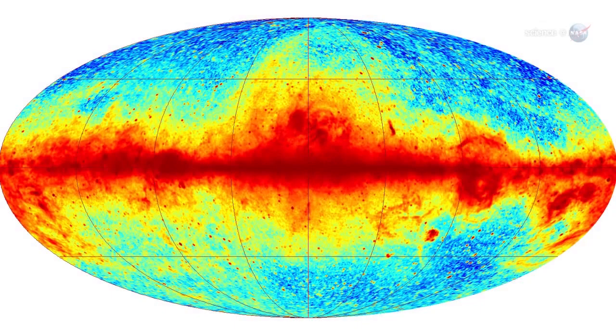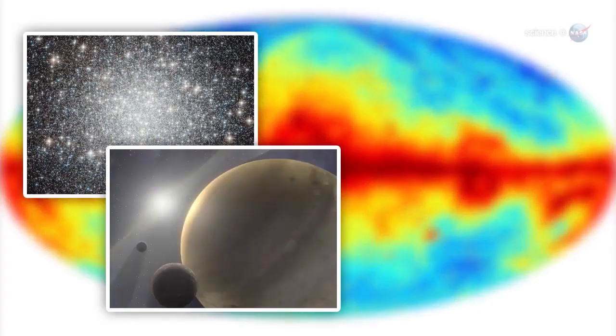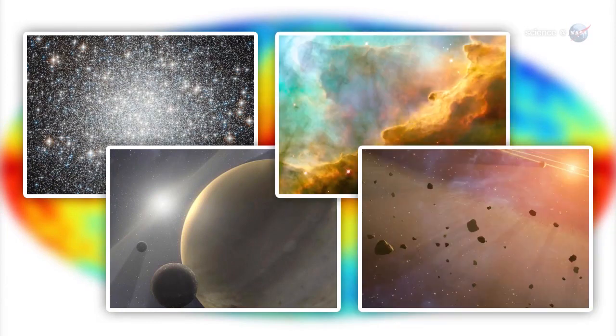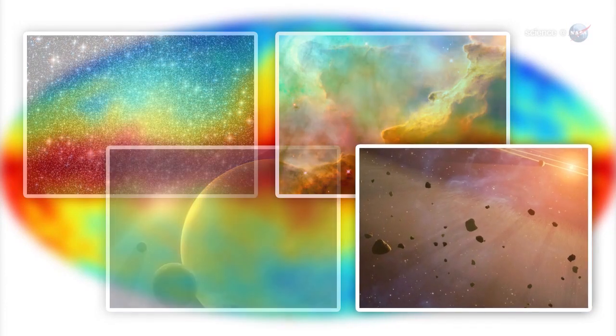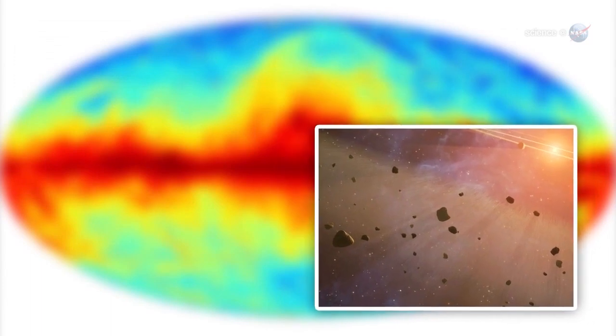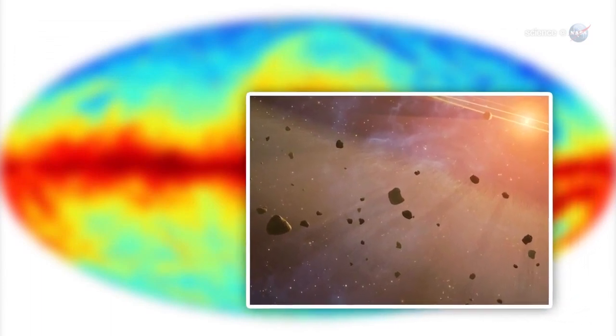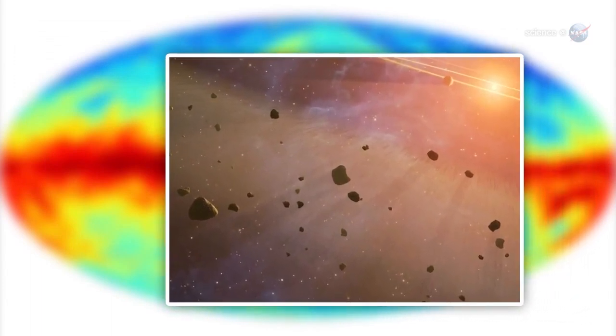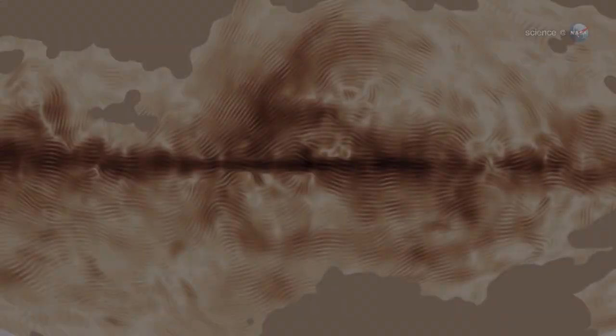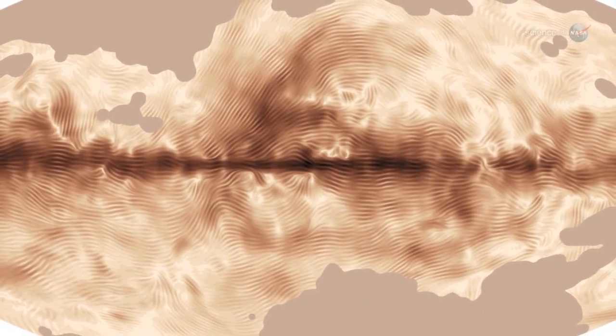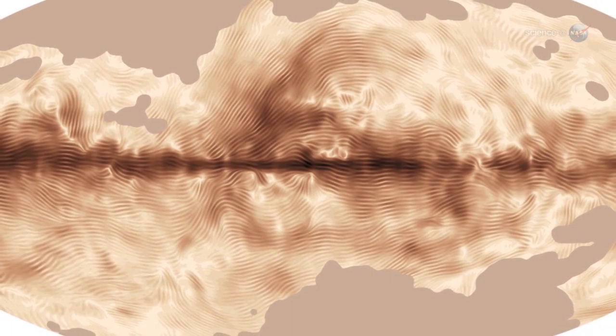The Milky Way is made up not only of stars and planets, but also of gas clouds and dust grains floating between the stars. Dust is the key. Interstellar dust shines with a microwave light that is polarized by galactic magnetism. Tracing the polarization allows researchers to map the Milky Way's vast magnetic field.